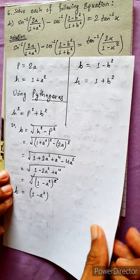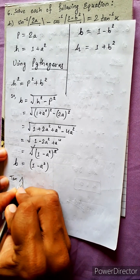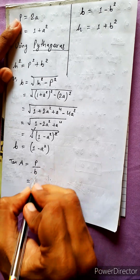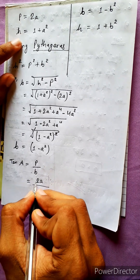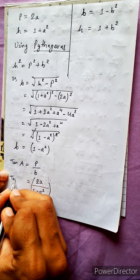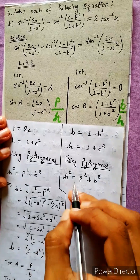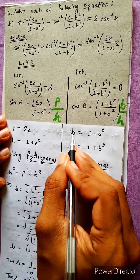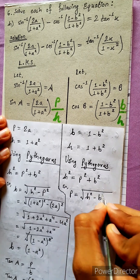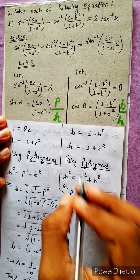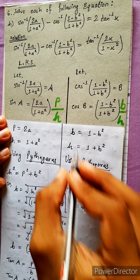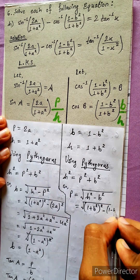The base is B and we use tan(A) equals P by B, where P equals 2A. So tan(A) equals 2A / B, where B equals (1 - A²). Similarly, 1 + B² and 1 - B² are the relevant expressions for the denominator terms.